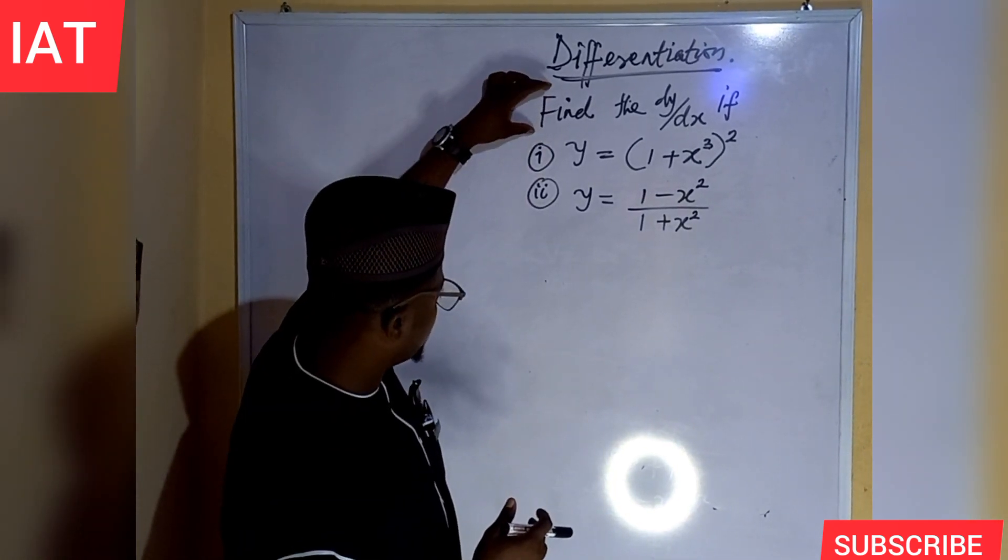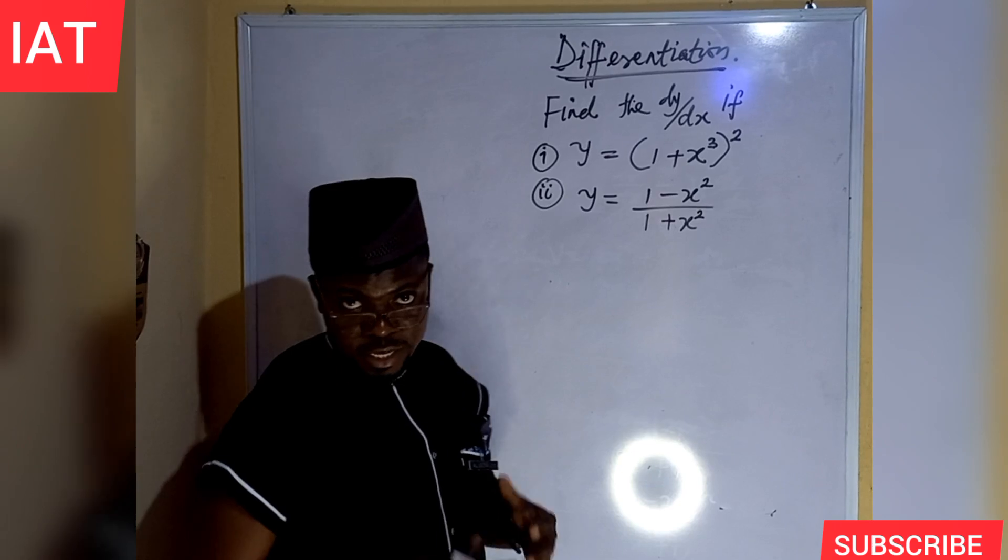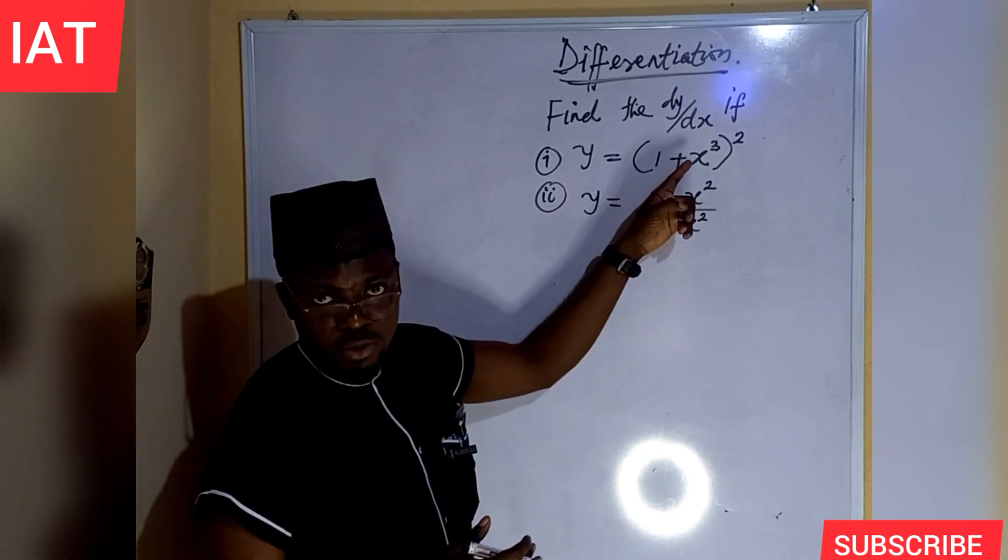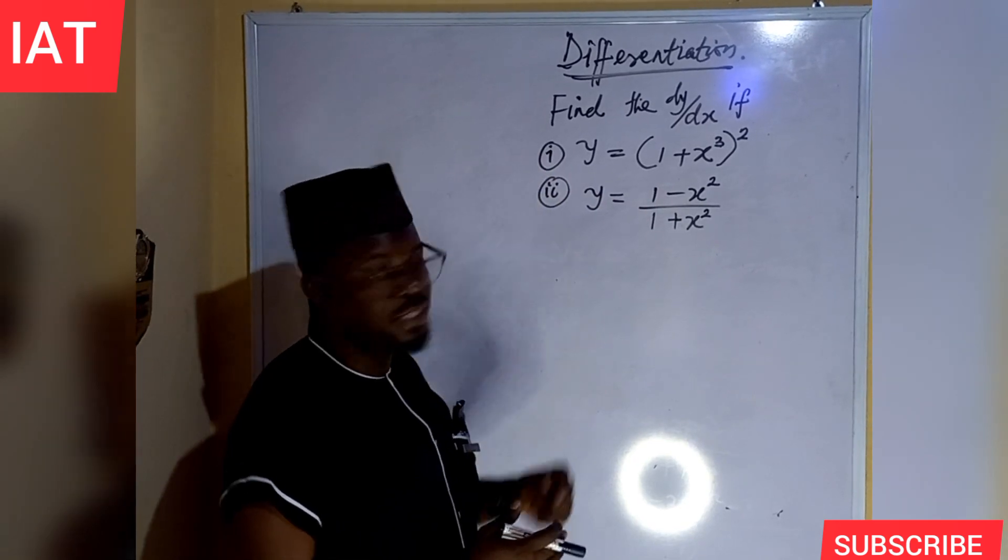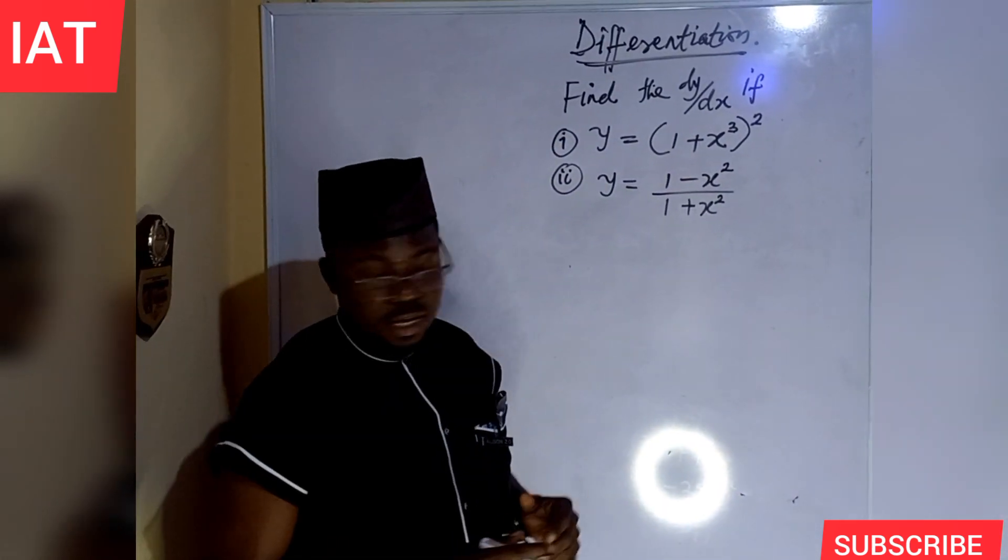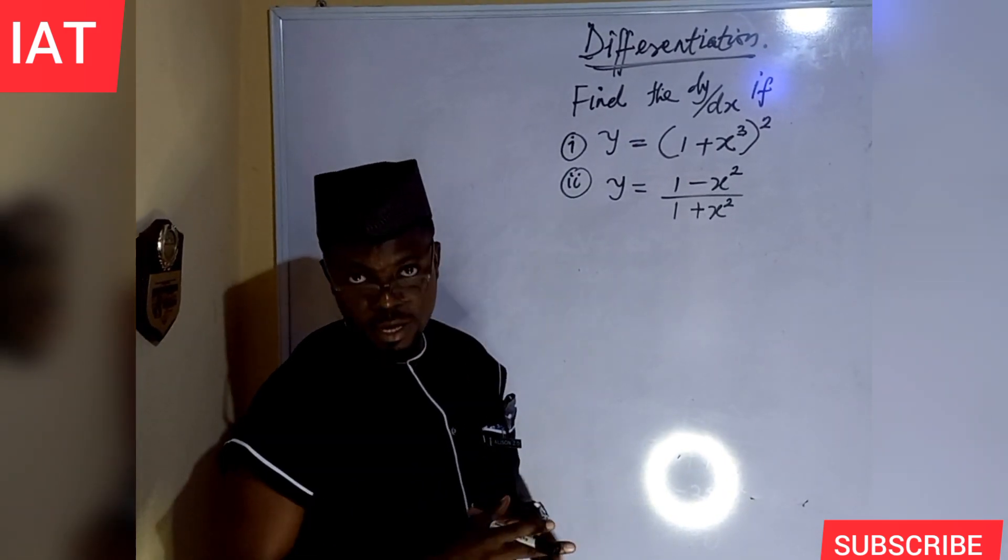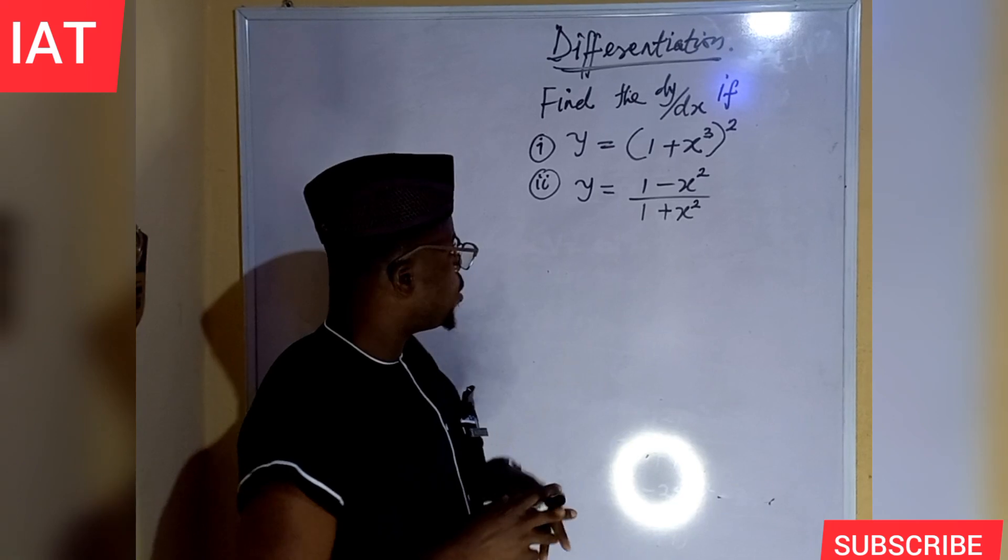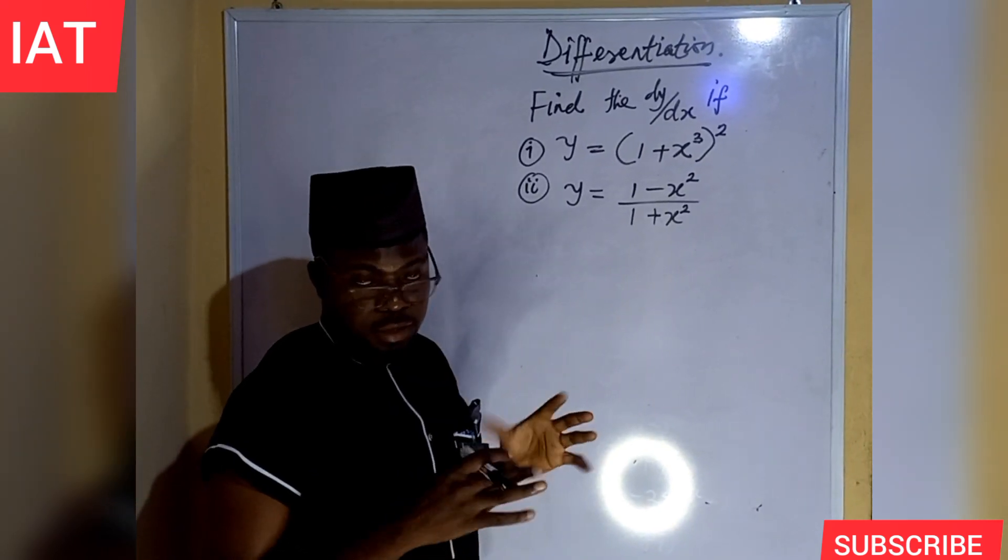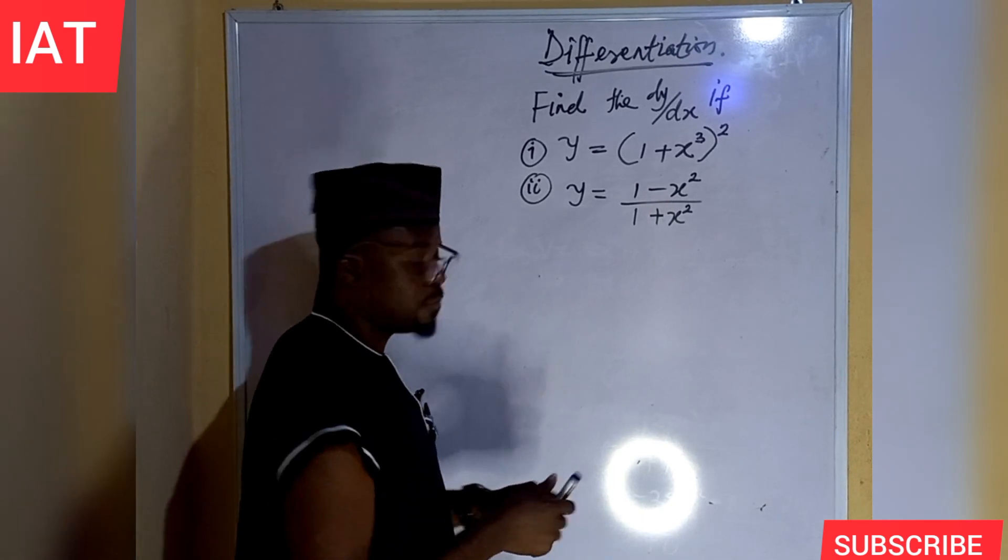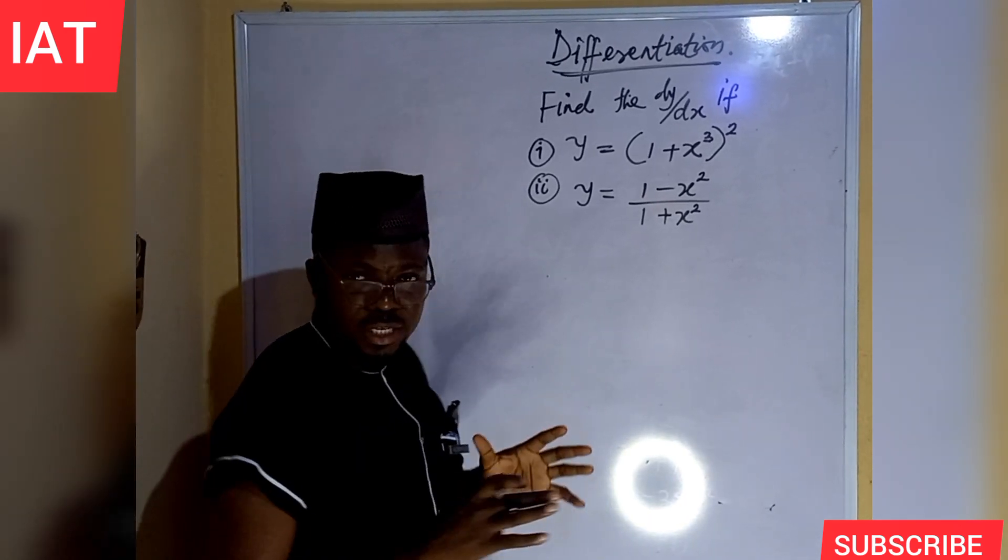The first question we have here is to find the derivative of y with respect to x in the first and second case. If you look at the shape of the first case, that is the function of a function or chain rule. That is the policy. And if you want to solve the problem, this is what you need to do.